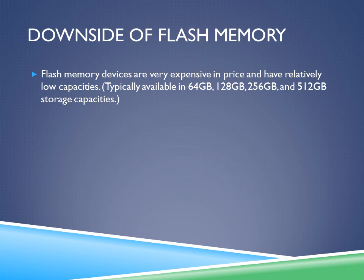The downside of flash memory is that devices are very expensive and have relatively low capacities, typically available in 64GB, 128GB, 256GB, and 512GB. The price difference is significant — you can get a 750GB hard disk drive for around $75 or less, while a 512GB solid-state drive would cost around $400. However, as solid-state drives become the norm, they will likely decrease in price and increase in storage capacity. Devices like the Chromebook use a low-capacity solid-state drive but focus on cloud services, allowing users to save files to a cloud server and access them from anywhere.